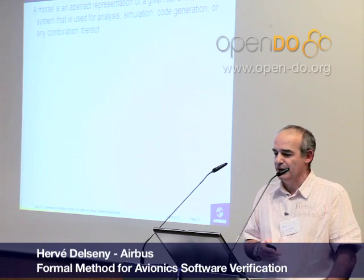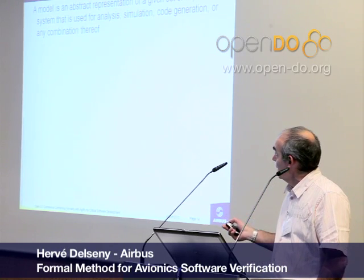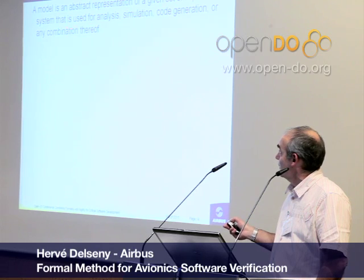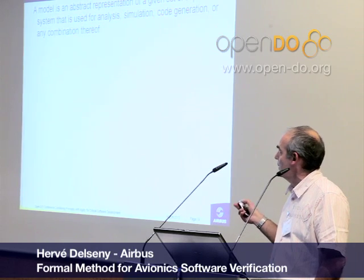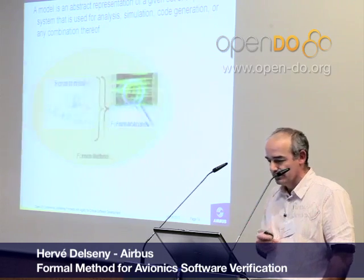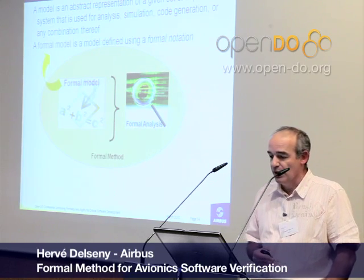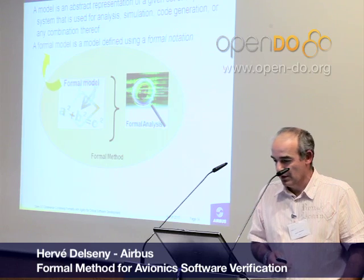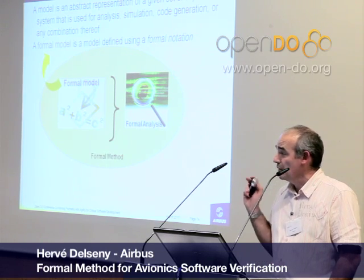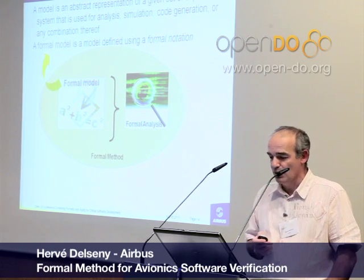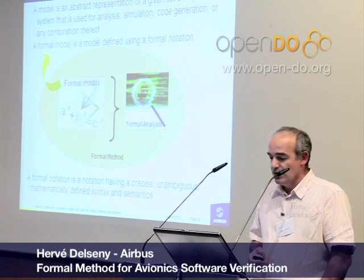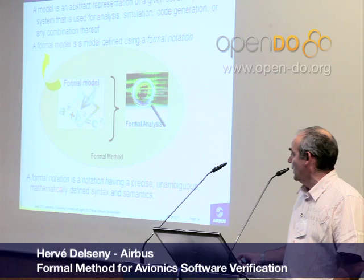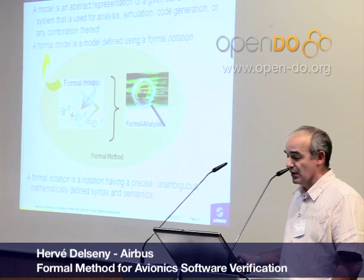And what is a formal model? A model is an abstract representation of a given set of aspects of a system used for analysis, simulation, and so on. But a formal model is a model defined using a formal notation — which is not necessarily the case for a regular model. A formal notation is a notation which has a precise, unambiguous, mathematically defined syntax and semantics.